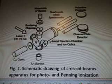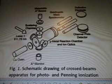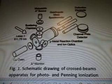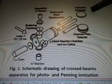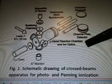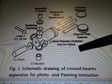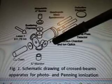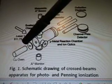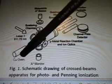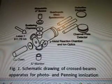So here's a diagram, it says a metastable A source, A source, quadruple mass spectrometer, deflection electrode, channel plate detector, metal reaction chamber, metal reaction chamber and ion optics, and there's a little U symbol there, scattering chamber, laser one, C something oven, and A star monitor. Okay.